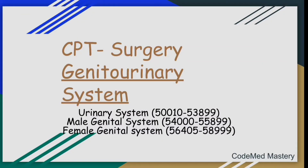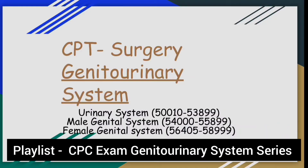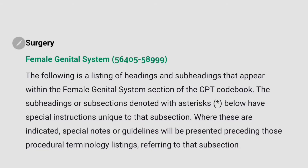Hi everyone, welcome back to my channel. In this video we'll study guidelines related to the female genital system. The code ranges are 56405 to 58999. In the previous video I explained guidelines related to urinary system and male genital system. You can check the video in the playlist: CPC exam genitourinary system series. The link will be mentioned in the description. Let's start — the codes for surgical treatment of female genital system can be found in the range 56405 to 58999.